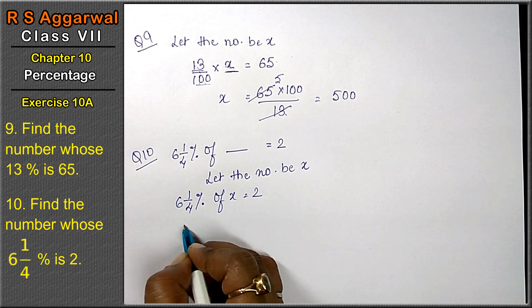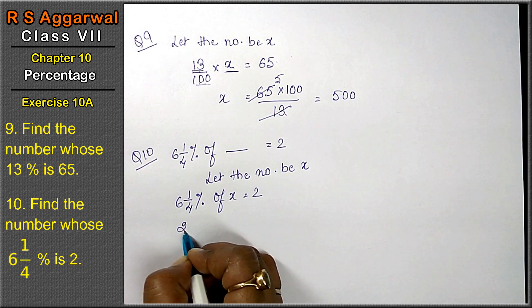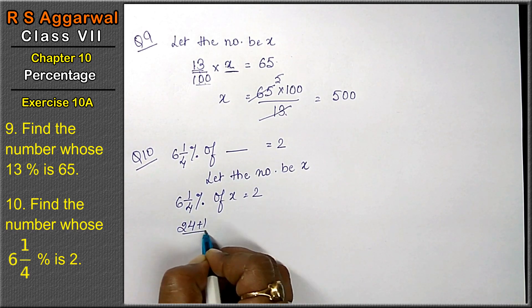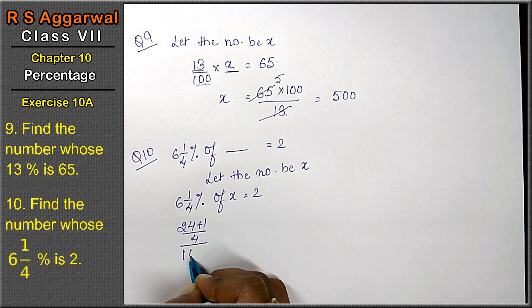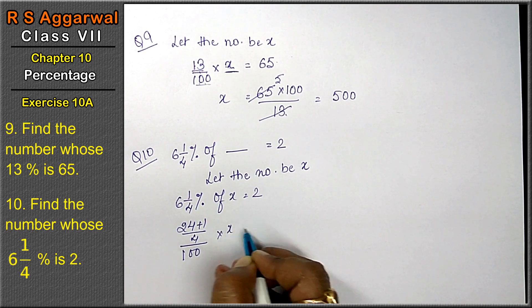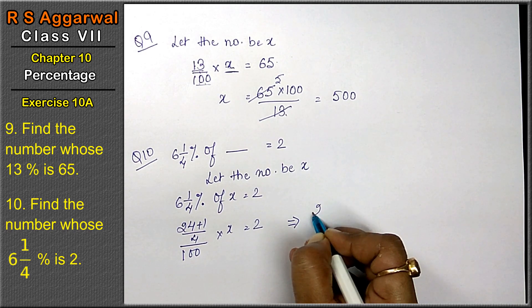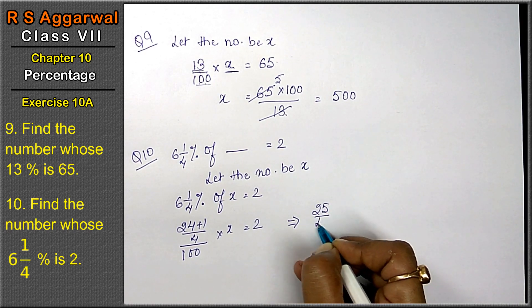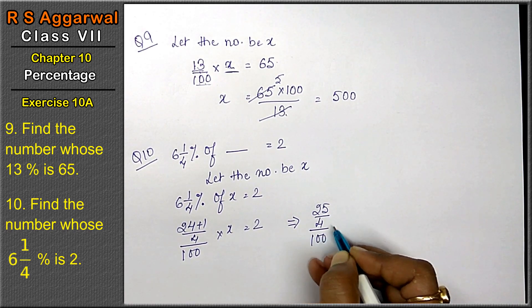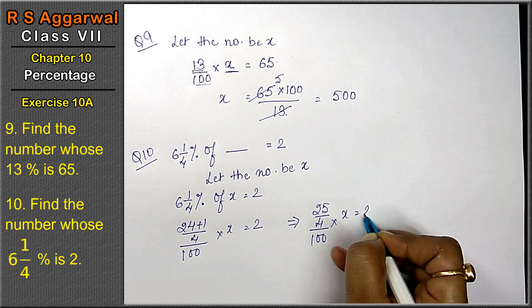Now this is how we do: 4, 6 is 24 plus 1 upon 4 upon 100 into x equals to 2. This becomes 25 upon 4 upon 100 into x equals to 2.